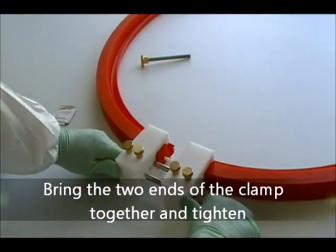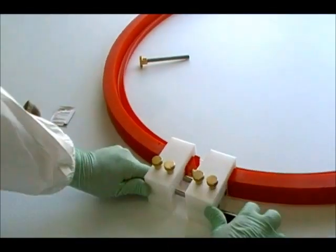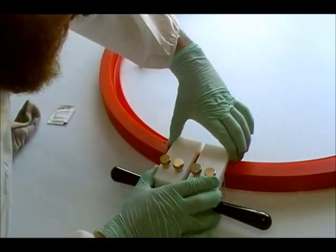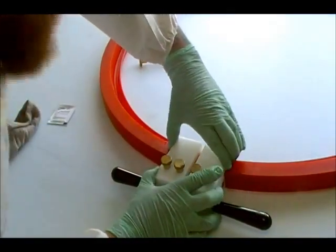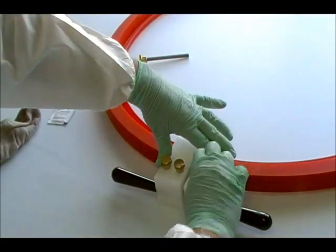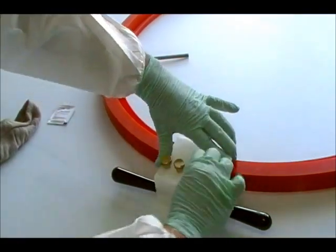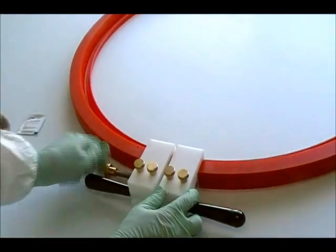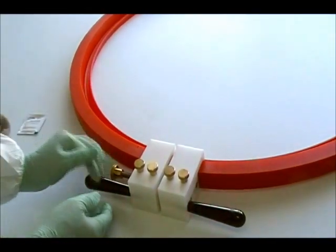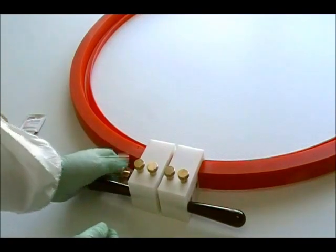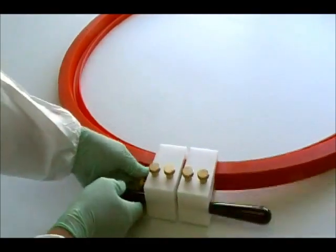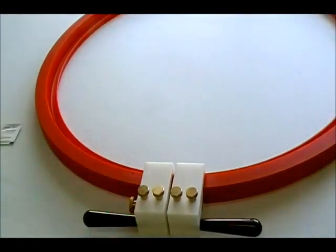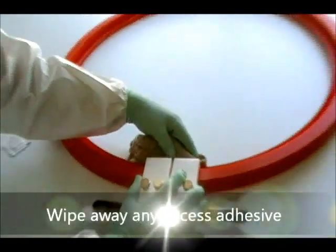Bring both ends of the clamp together and make sure clamping bolts are tight. Insert the center pin and tighten. Using a rag you can wipe away any excess adhesive.